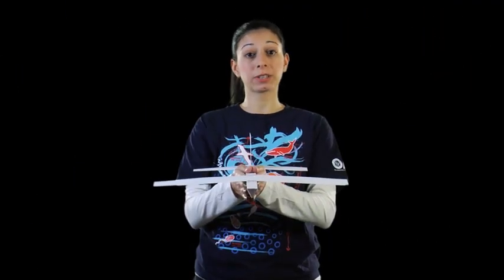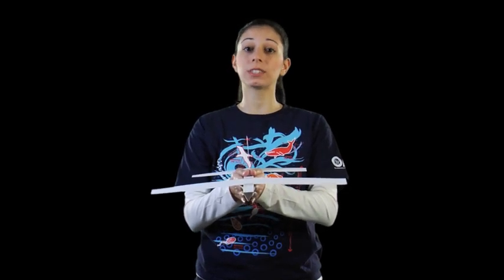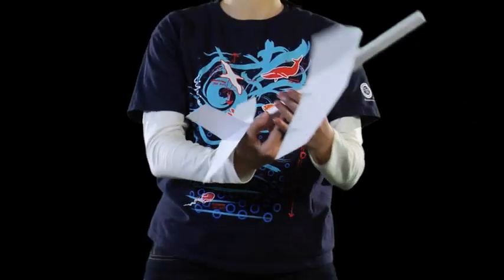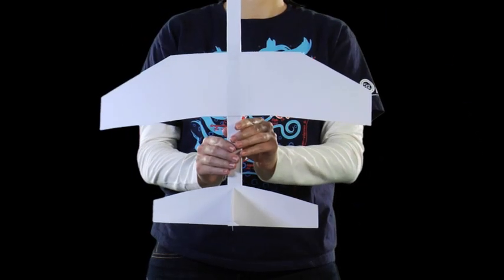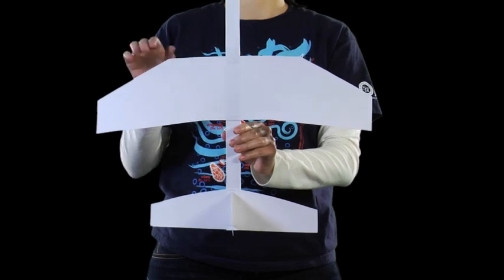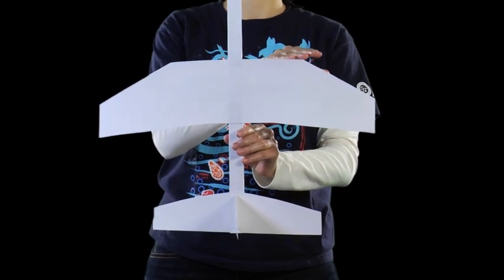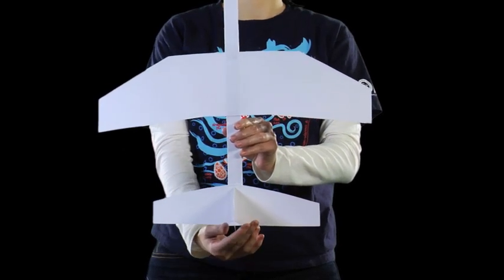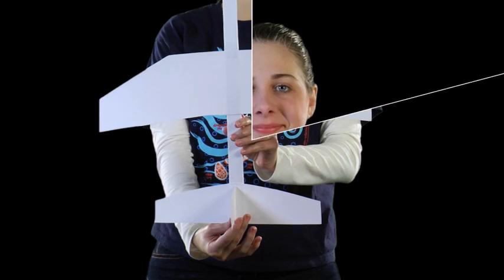This is also true if your plane is turning left or right. If your plane is not balanced from left to right, then it will tilt one way and then turn in that direction. To make sure it's balanced left and right, look at the top of your plane and make sure the wings are even. If we don't tape the wings on evenly, they can affect how a plane will fly. Now it's time for us to experiment.